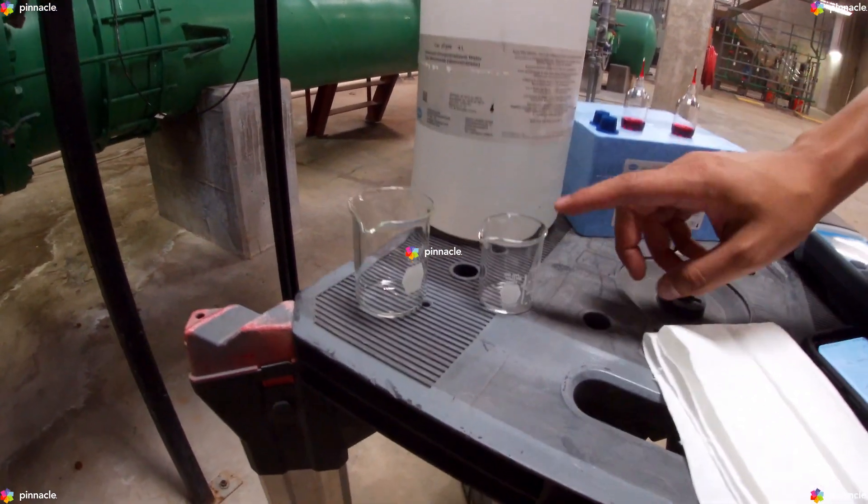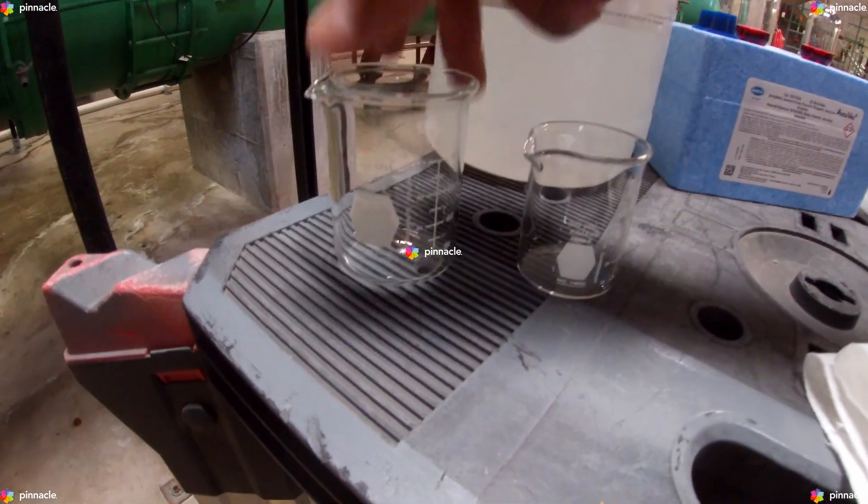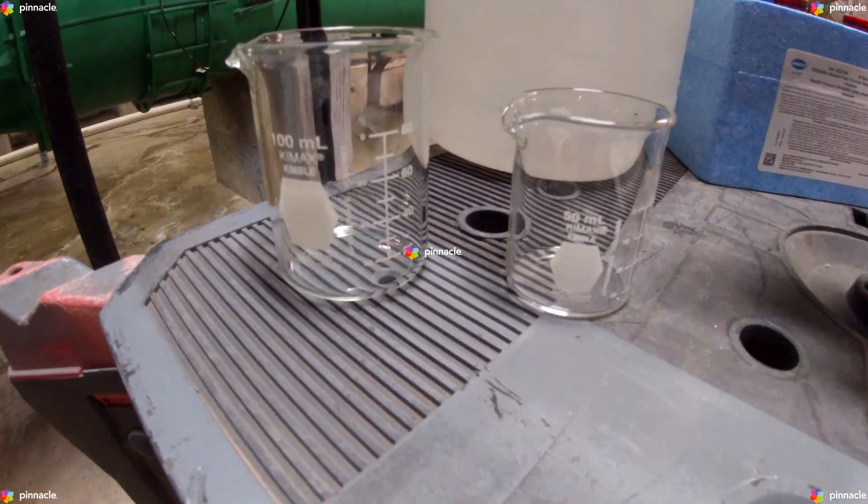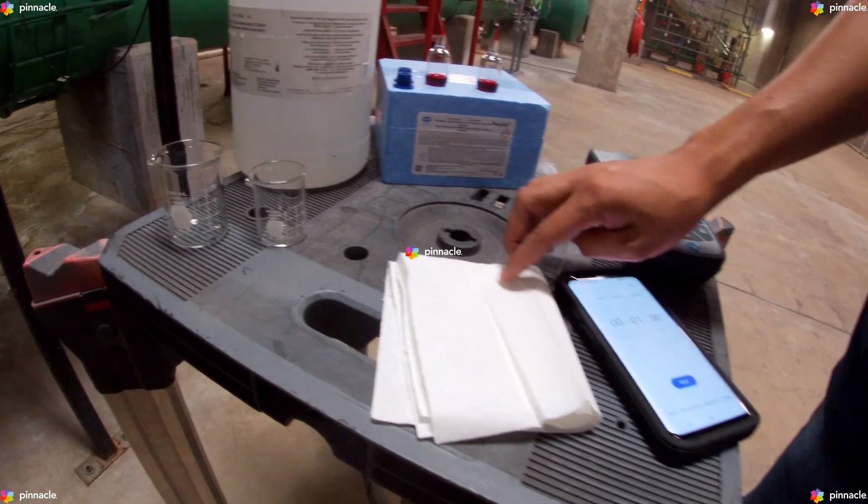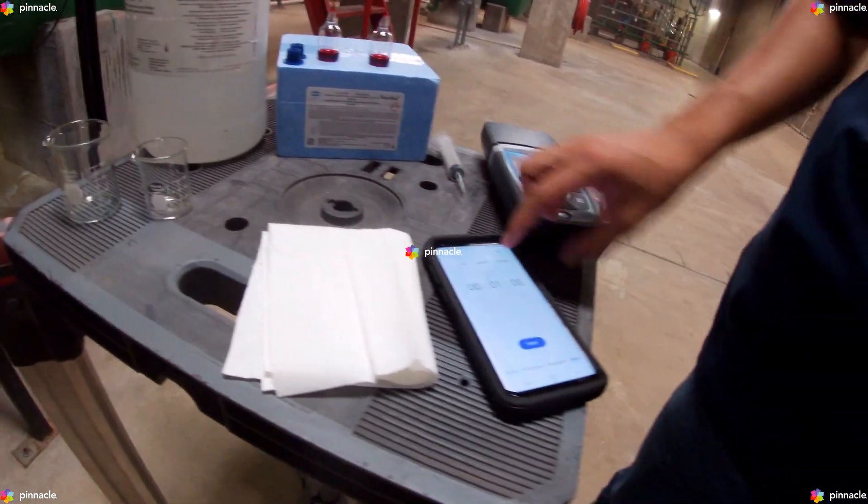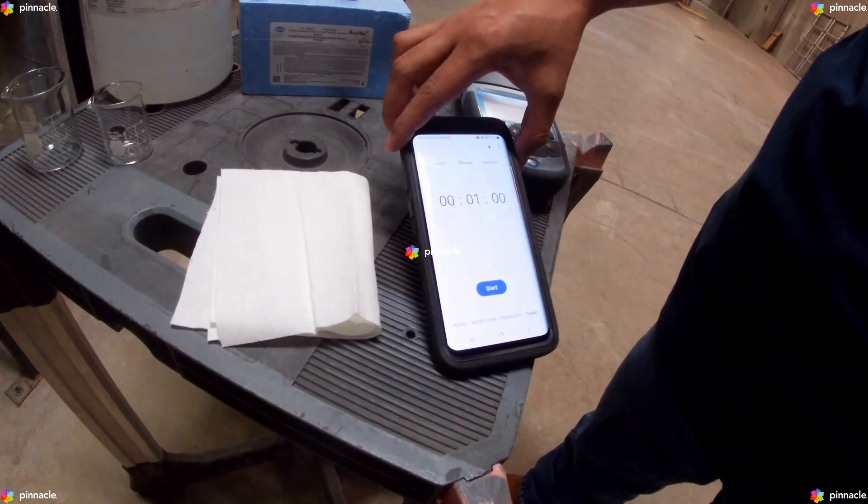We'll also need two beakers capable of measuring at least 40 milliliters each, a paper towel, and a stopwatch set for one minute.